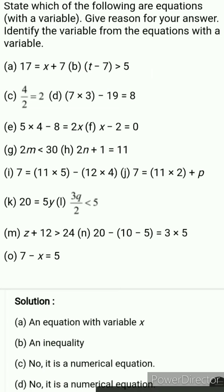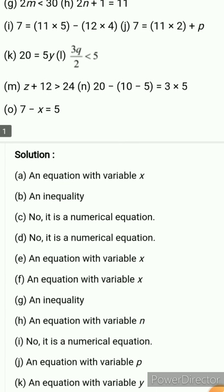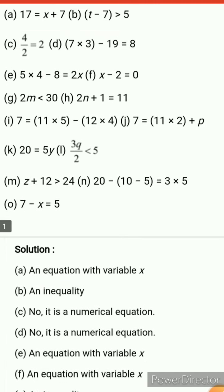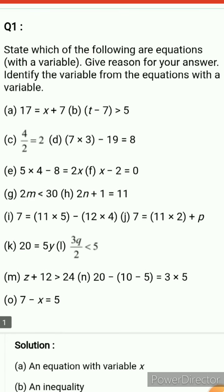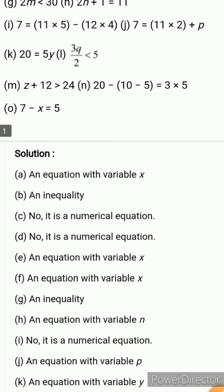Next is 4 divided by 2 equals 2 — this is an equation but without a variable. There is no variable here; it is a numerical equation. Similarly, 7 multiplied by 3 minus 19 equals 8 is again a numerical equation.